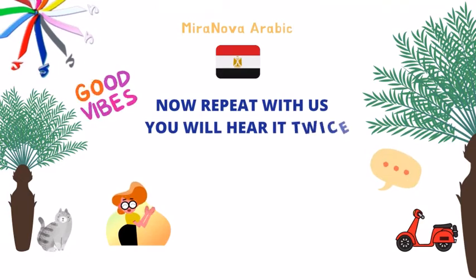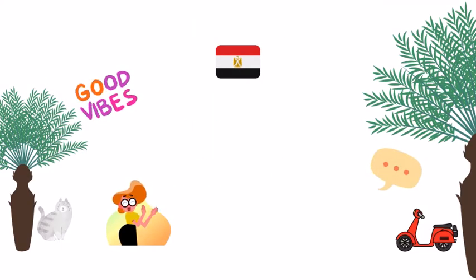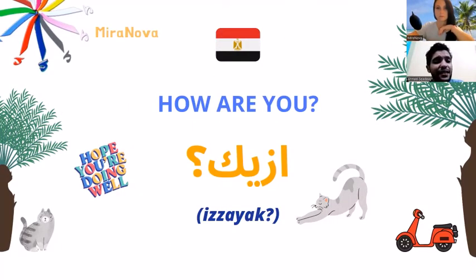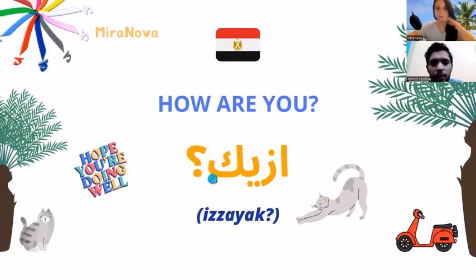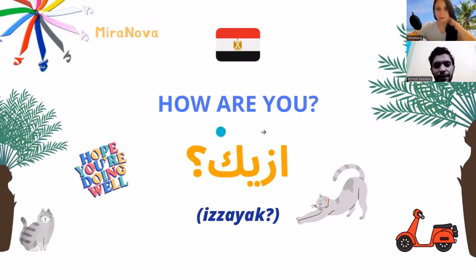Now repeat with us - you will hear it twice, exaggerate, enjoy and feel the language. Yalla! 'Izzayak' for a man like Ahmed, 'izzayik' for a girl. How you doing, Ahmed? 'Izzayak'. How you doing, Mira? 'Izzayik'. So you can say 'izzayak' or 'izzayik' depending on who you're talking to.